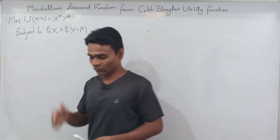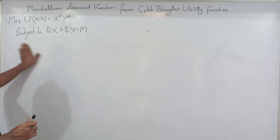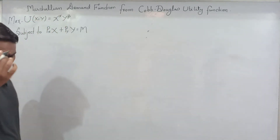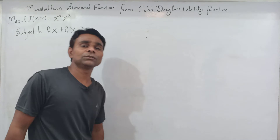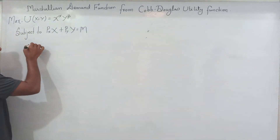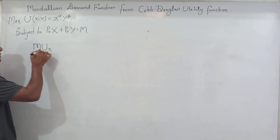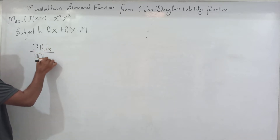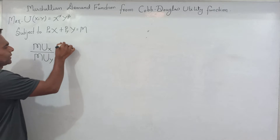Now let's start the solution to this problem. According to Marshallian utility analysis, the ratio of marginal utility of goods x and y equals the ratio of their prices.